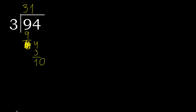Always complete with 0 — place a decimal point here. Write 0, complete with 0. Now we have 10. 3 multiplied by 4 is greater, so try 3 multiplied by 3 is 9.